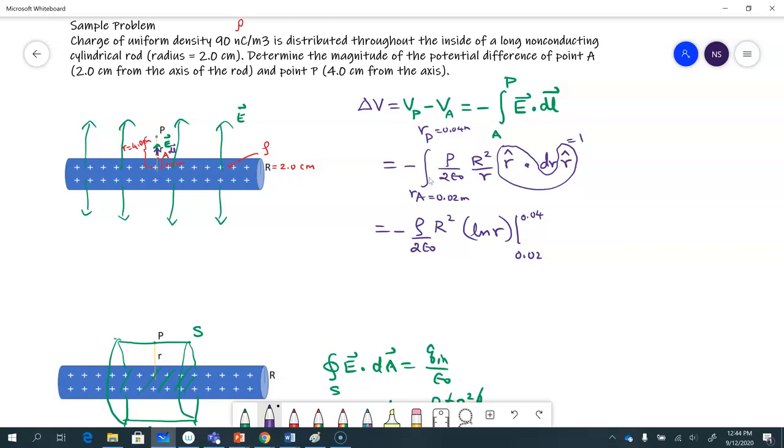So this is rho, which is 90 nanocoulombs per cubic meters, SI units, divided by 2 times epsilon naught, 8.85 times 10 to the negative 12 coulomb squared per newton meter squared. And then the radius is 0.02 meters squared. And then I have natural log of 0.04 minus natural log of 0.02.